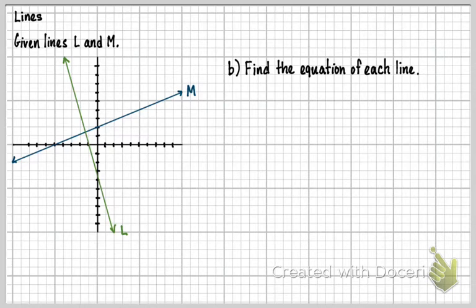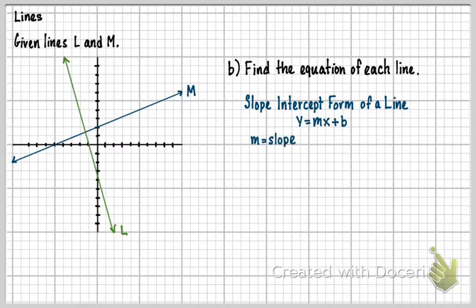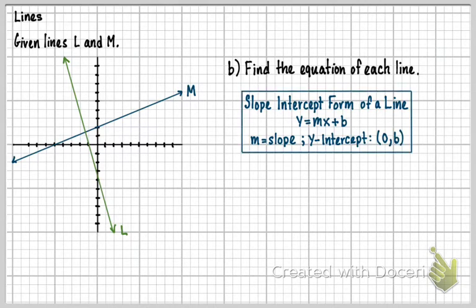So what we need first is a formula for this. We have a general formula for a line. We're going to use slope intercept form of a line, and that's y equals mx plus b. M is the slope, and the y-intercept is (0, b). This is my slope intercept form of a line. This is the formula we're going to use here.